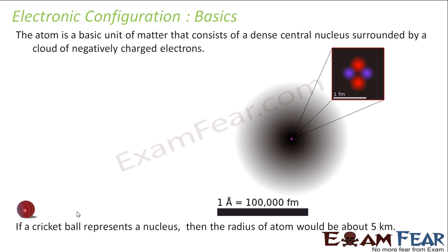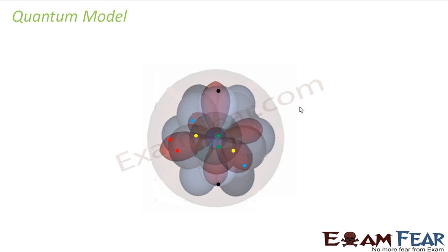To give you a sense of scale — if a cricket ball represents the nucleus, the radius of the atom would be about 5 km. Such a big distance it has.